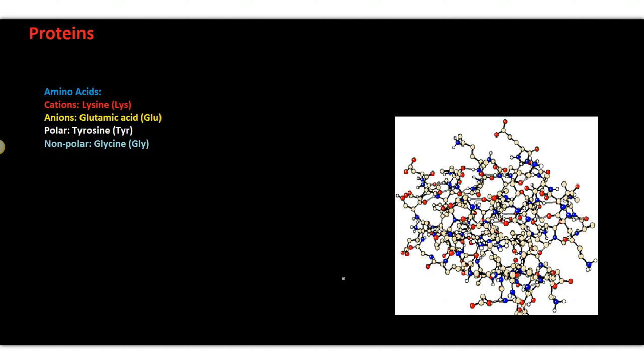In amino acids, there are amino acids that have negative charges, they are anions. There are amino acids that have positive charges, they are cations. And then there are polar amino acids and non-polar amino acids.